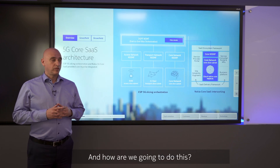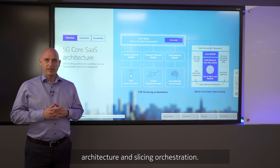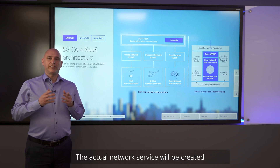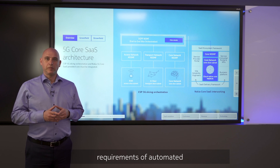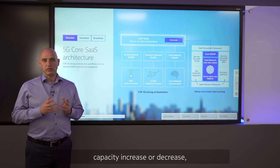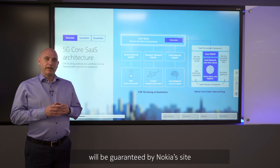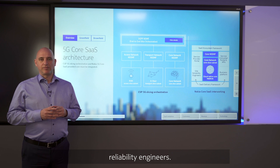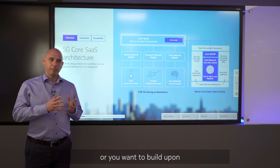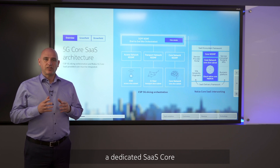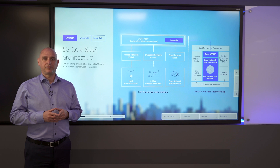And how are we going to do this? We'll insert the core SaaS model into a 3GPP architecture and slicing orchestration. The actual network service will be created by the SaaS delivery framework that fulfills the requirements of automated prepackaged ordering, capacity increase or decrease, billing and analytics. The operation and maintenance will be guaranteed by Nokia's site reliability engineers. And it doesn't matter whether you want to deploy a new 5G core from scratch or build upon an existing network — a dedicated SaaS core slice will be set up to introduce new services or increase the capacity.